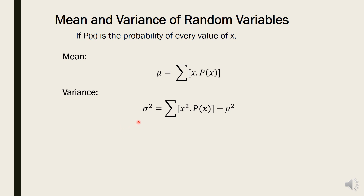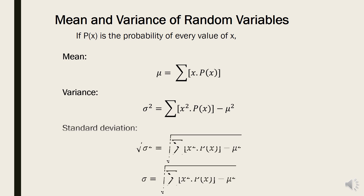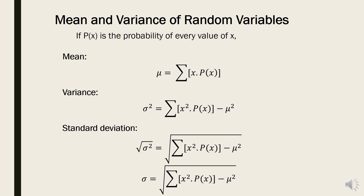Once we have the variance, it is easy to find the standard deviation — we only need to take the square root of both sides. So the standard deviation, sigma, is equal to the square root of the variance.